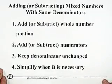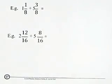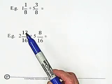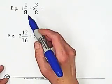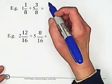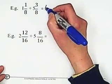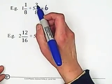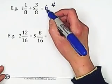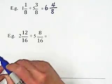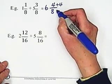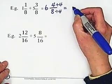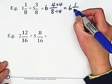I would like to show you how to add fractions with same denominators. This is a mixed number: 1 and 1 over 8 plus 5 and 3 over 8. Follow the rules. Add the whole number portion: 1 plus 5 equals 6. Because of same denominators, we add the numerators: 1 plus 3 equals 4. Keep denominator unchanged. And 4 over 8, we can simplify by dividing 4 into the top and the bottom. We got 6 and 1 over 2.